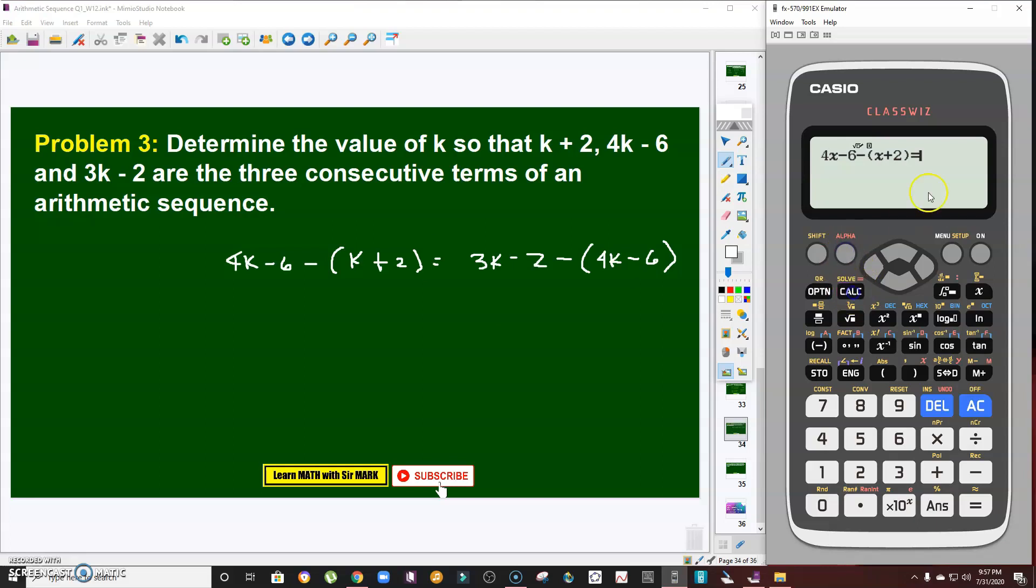Then enter 3k - 2 or 3x - 2, minus 4k - 6 or 4x - 6. Once the equation is complete, shift and then solve. See that? The value of k here is actually 3. You can verify if the answer is correct. You can see in my previous video the answer there is 3.